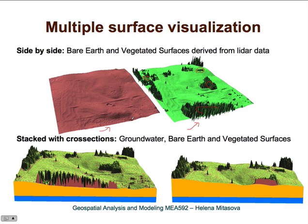You can display this data on top of each other and look at cross sections. In this example we have a groundwater layer, then the bare ground layer, and then the digital surface model layer which has vegetation and buildings on top. When the surfaces are stacked, it is very useful to use cross sections or cutting planes to explore how the relationship between these surfaces changes in space, and you can also explore the structure of vegetation.